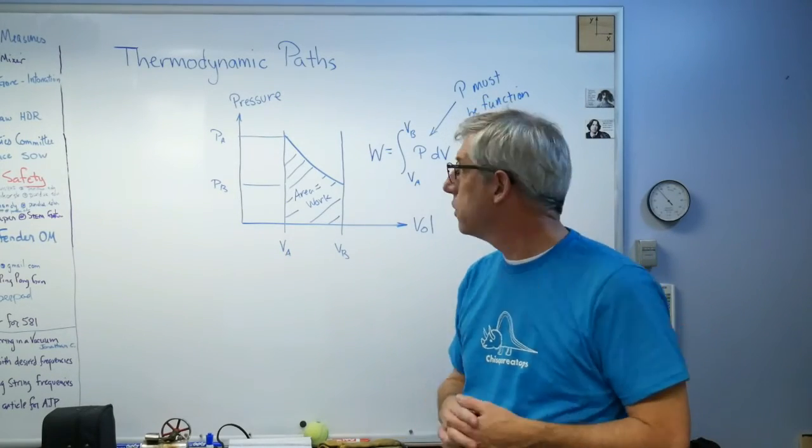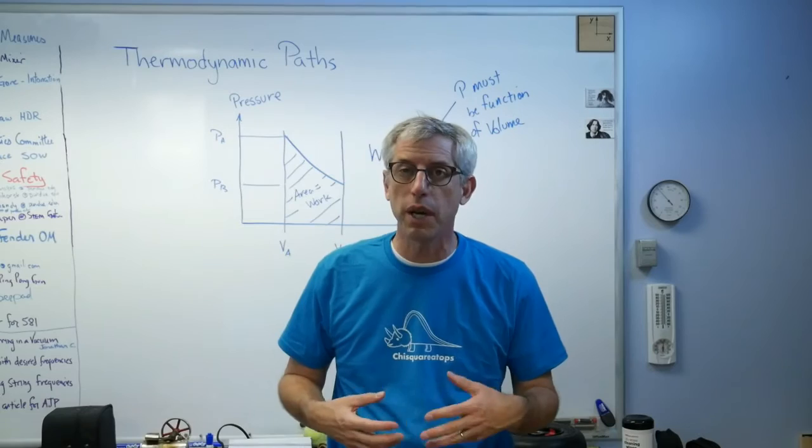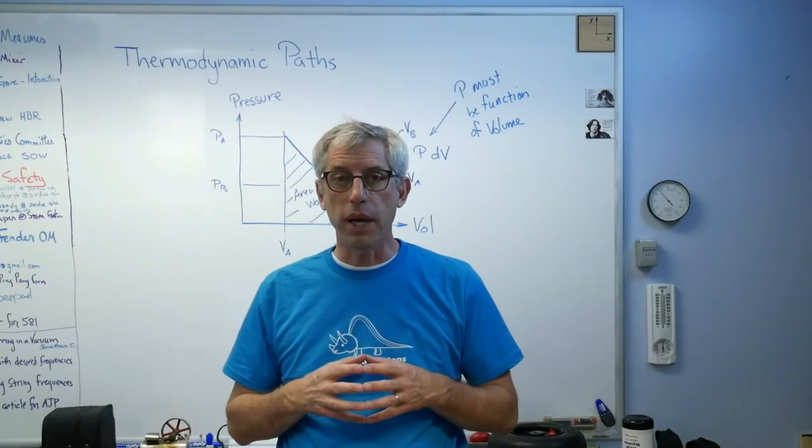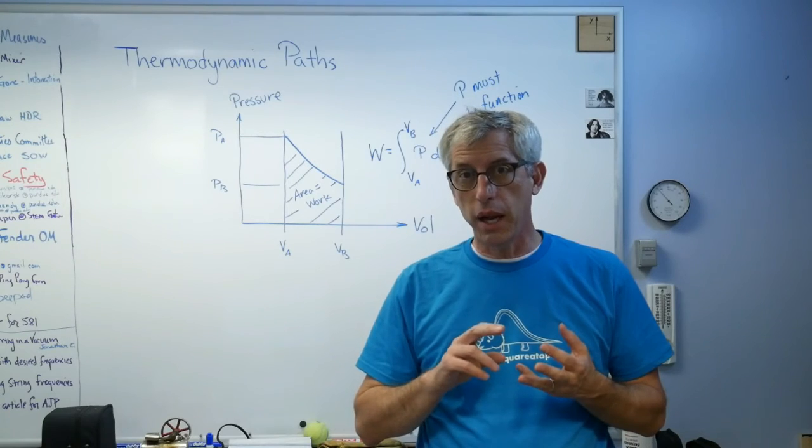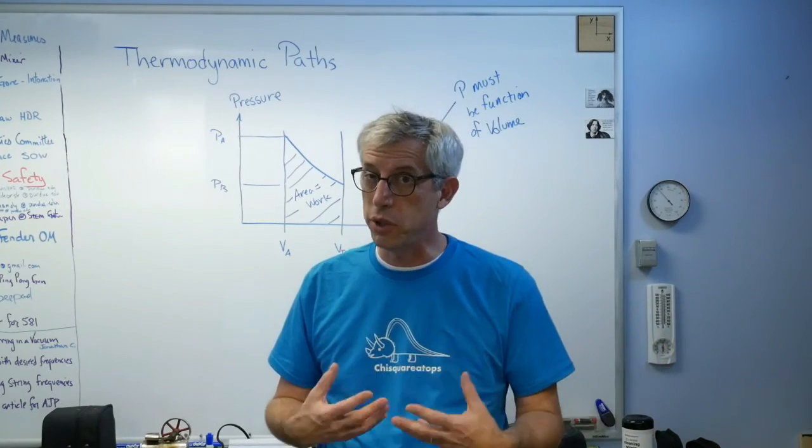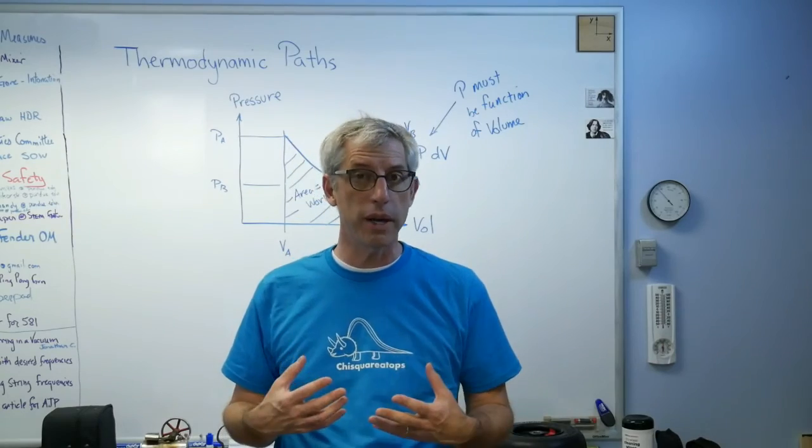So this is the idea. This is called a thermodynamic path. And the big idea is you're trying to look at mass flow and energy flowing through a system. And that system could be a machine, it could be a process, it could be a lot of stuff.